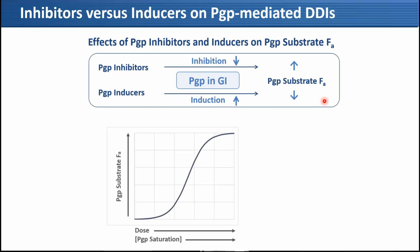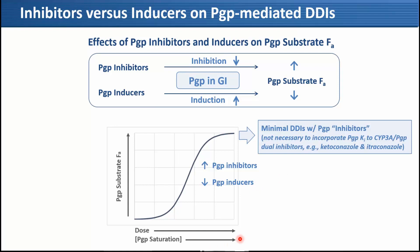This is just for visual purposes. I'm not sure whether this relationship shows a sigmoidal curve or not, but when dose increases and P-gp becomes saturated, substrate FEa increases. P-gp inhibitors and inducers work oppositely. When P-gp is saturated in this area, we expect minimum DDI with P-gp inhibitors.